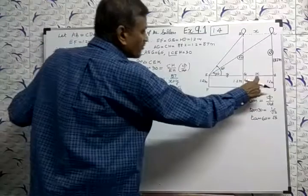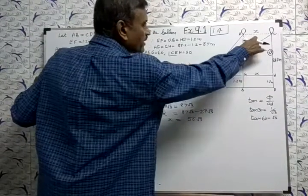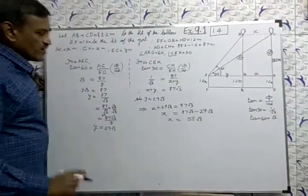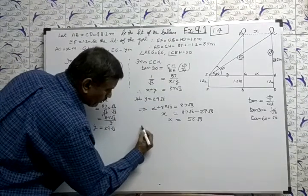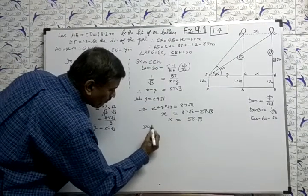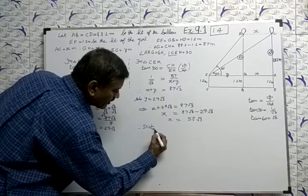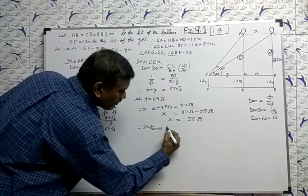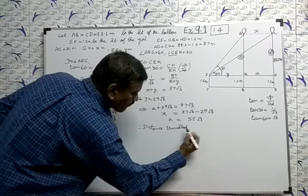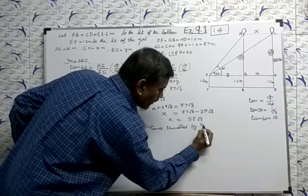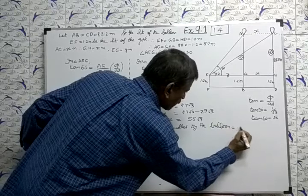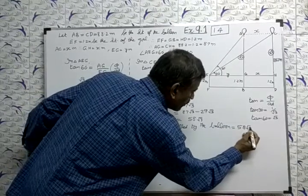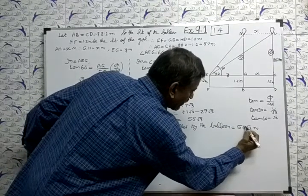Therefore, distance traveled by the balloon equal to 58 root 3 meters.